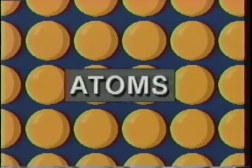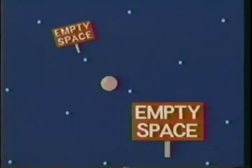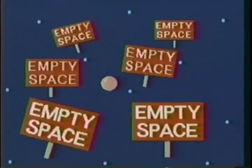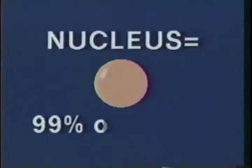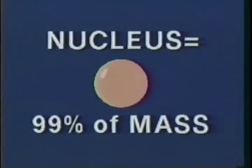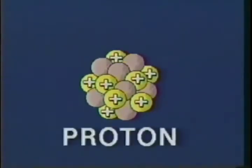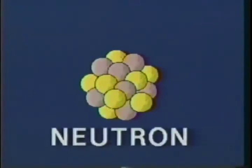We believe that all substances consist of tiny particles called atoms. Our current model of the atom assumes that it is mostly empty space. And in a tiny volume called the nucleus, over 99% of the mass of the atom is concentrated. Further evidence suggests that the nucleus is made up of particles called protons, which are positively charged, and neutrons, which are neutral in charge.